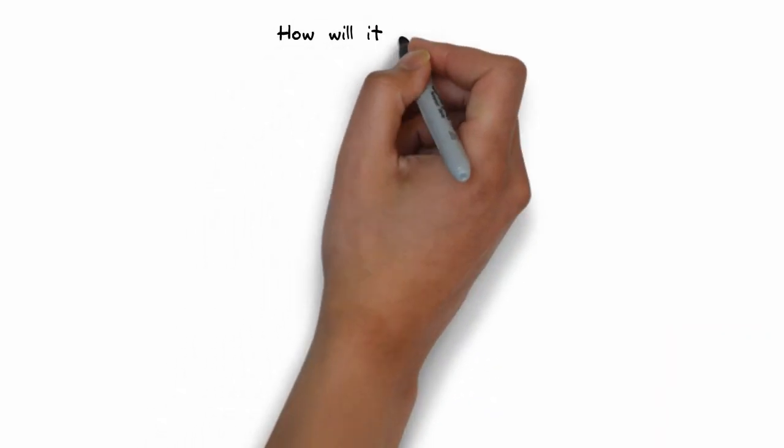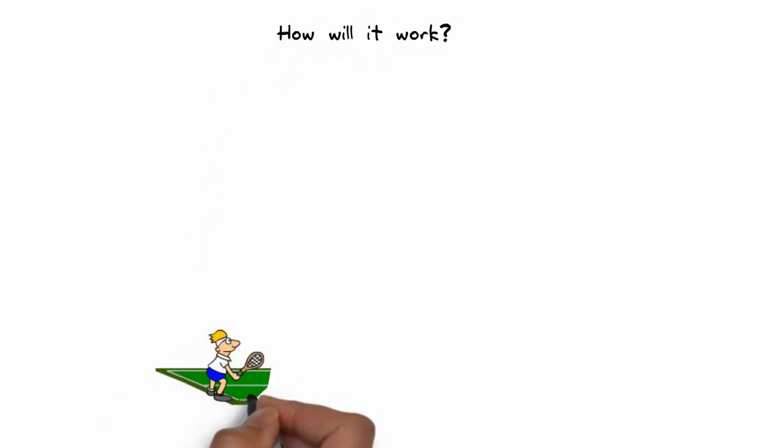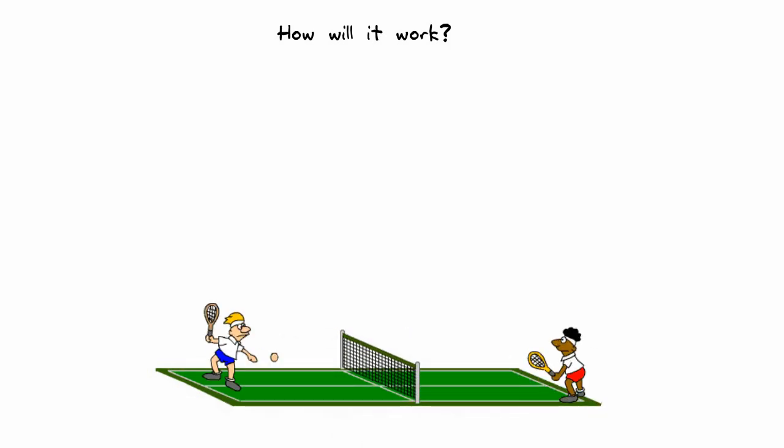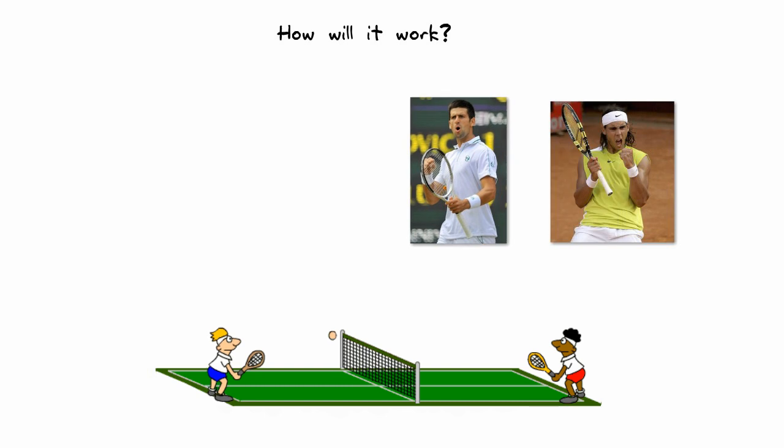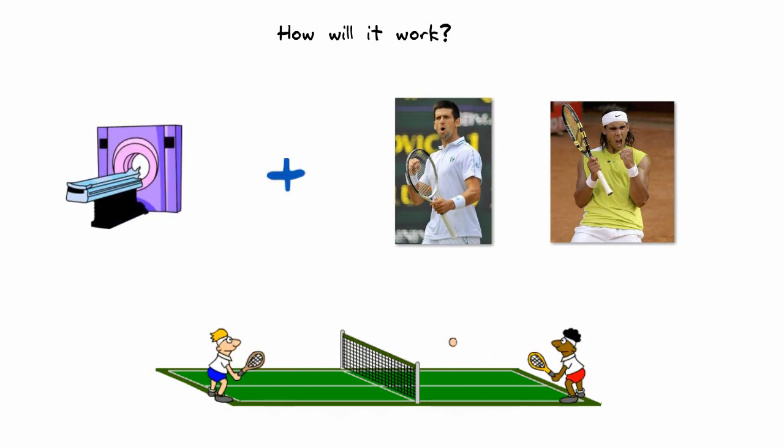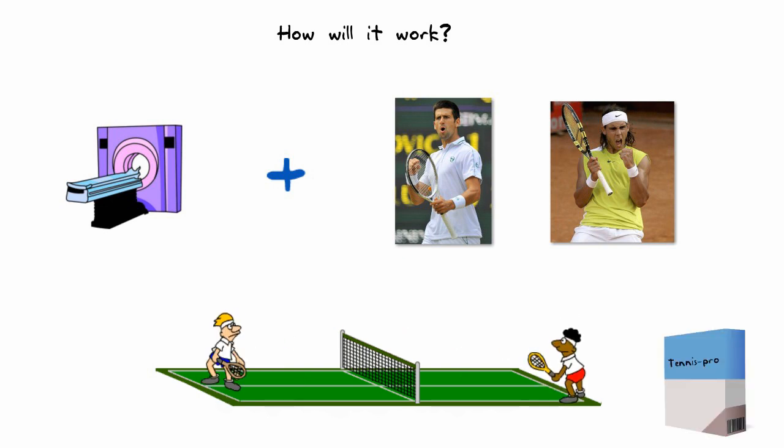So, how will it work? You pick a task that requires high performance from your visual cortex, like playing tennis. Then, you go to find professional tennis players, stick them in an fMRI machine, and record what's going on in their brain while they visualize playing tennis. Now, you've got your Tennis Pro program, and you're ready to learn.